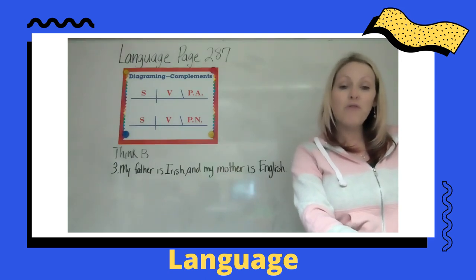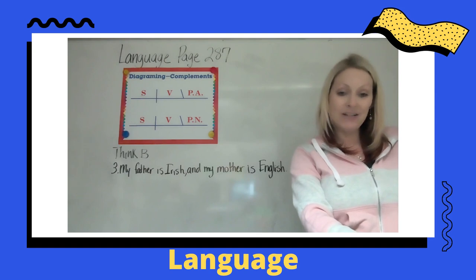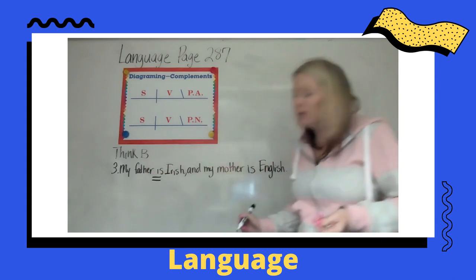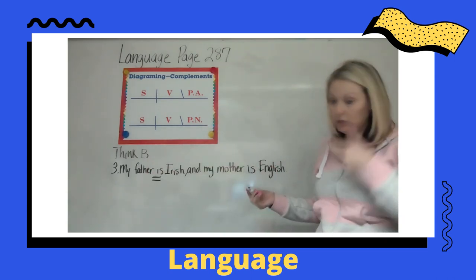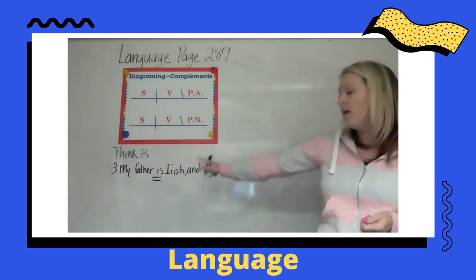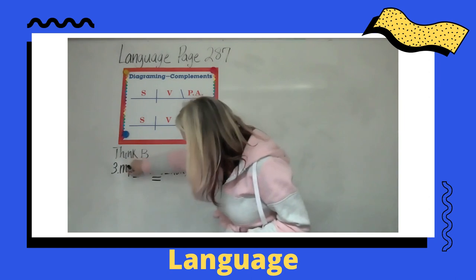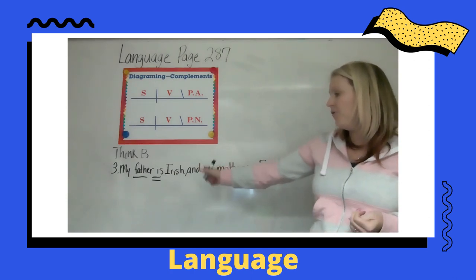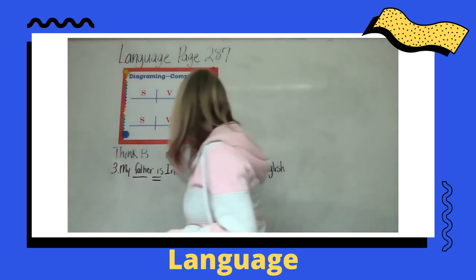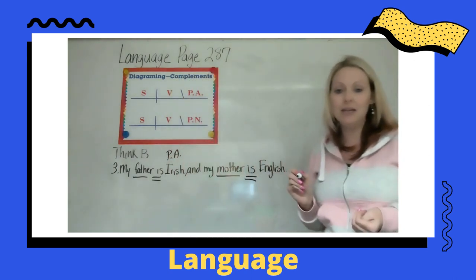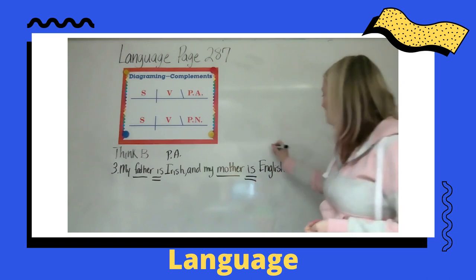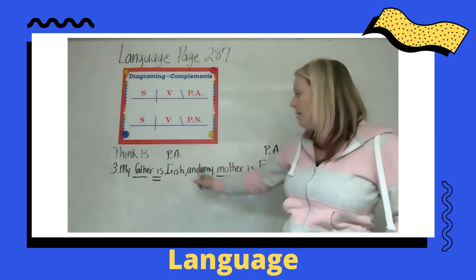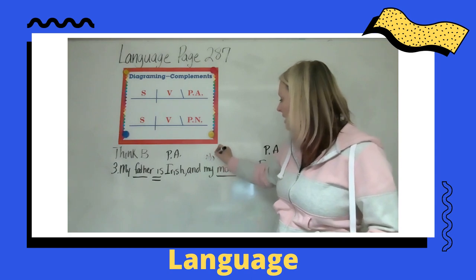Number three says 'My father is Irish and my mother is English.' Let's find out what our verbs are. The verb is 'is' — but wait, there are two 'is's, because there could be two verbs. On this one, 'father is,' and on this one, 'mother is.' My father is Irish — that is a predicate adjective describing who he is. Mother is English — that's a predicate adjective describing that she is English. And 'my mother' and 'my father' — remember, these are adjectives.